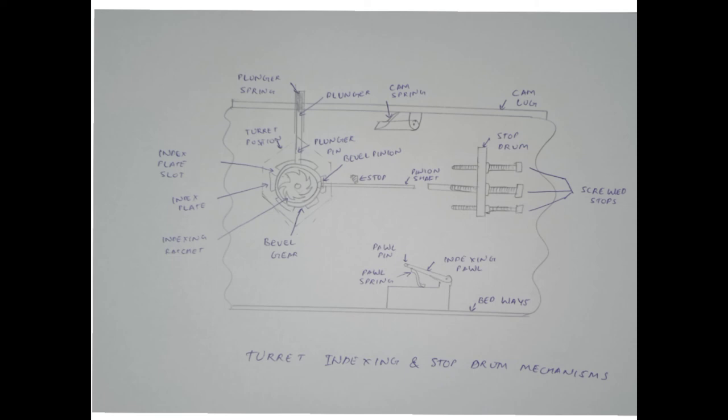The ratchet carries six equi-spaced teeth corresponding to the six faces of the turret. Therefore, for each one tooth rotation of the ratchet, the turret is indexed through one-sixth of the revolution, bringing the next face tool or tool holder in position for the next operation. Thank you for watching this video.